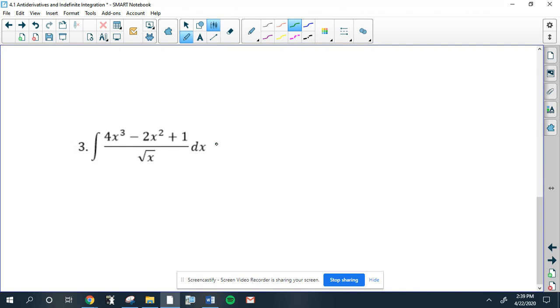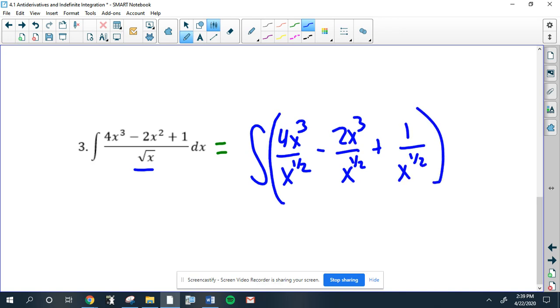So we're going to do that, and the best way to do it is to split up the fraction. As long as you have one term on the bottom, you can split up the fraction. So this is 4x³ over x to the 1/2, minus 2x² over x to the 1/2, plus 1 over x to the 1/2. And that's all still with respect to x.